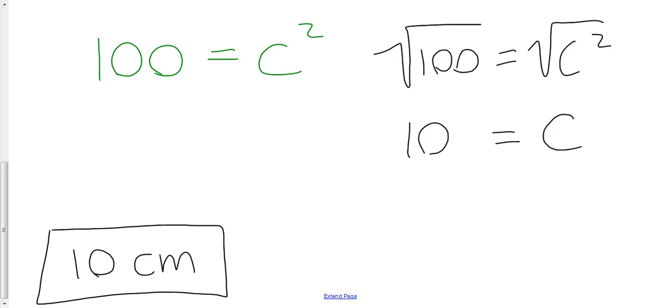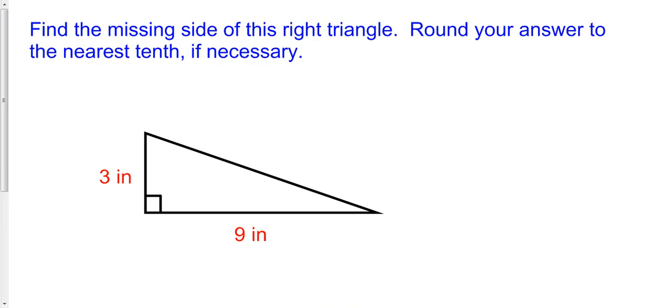All right, let's try one more. So the same thing here. We're going to find the missing side of a right triangle. It happens to be the hypotenuse that's missing. So that is C in our relationship. So A squared plus B squared equals C squared.